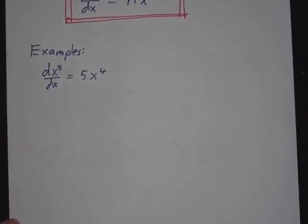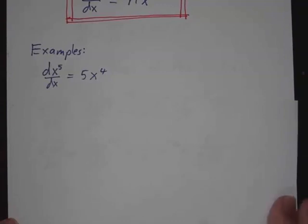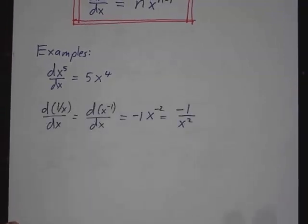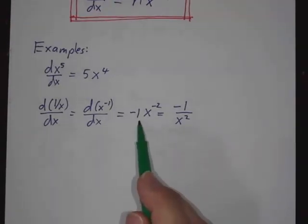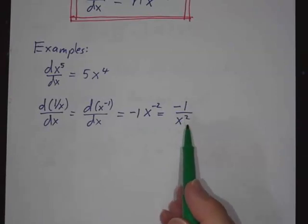But you can also use it for things that you don't usually think of as powers. So what's the derivative of 1 over x? Well, 1 over x is x to the minus 1. So that's negative 1x to the minus 2. Here, n is negative 1. And that's minus 1 over x squared.